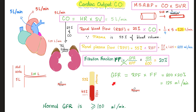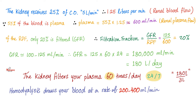Your GFR is normally 125 ml per minute. There are 60 minutes in an hour and 24 hours in a day — therefore your kidney filters 180 liters per day. Your entire body has only about 3 liters of plasma, which means your kidney filters your plasma 60 times every day. You cannot match a normal kidney. Poor patients on dialysis go to the hospital twice or thrice a week, not 60 times a day. If your kidney function is normal, you should be grateful.